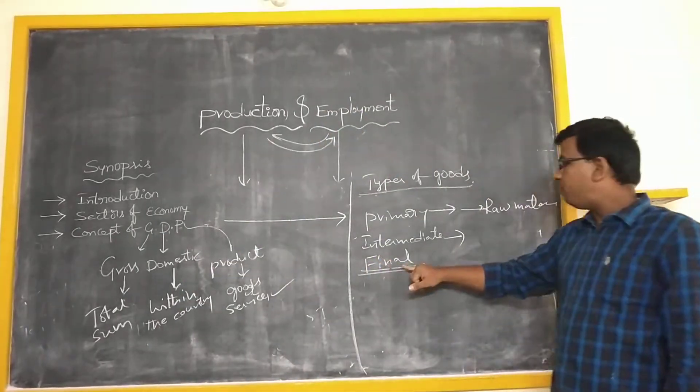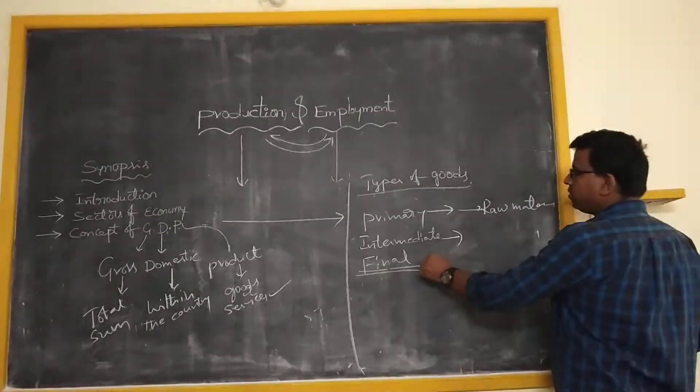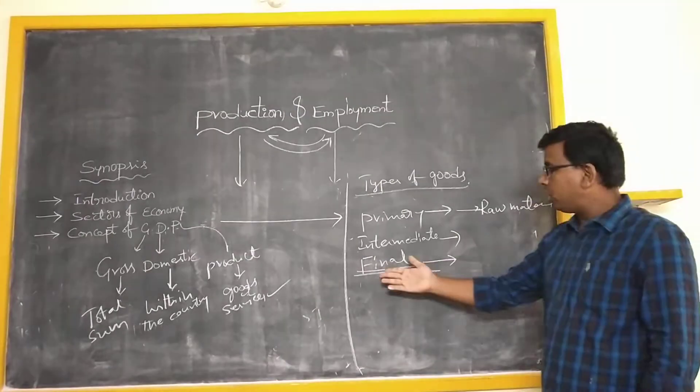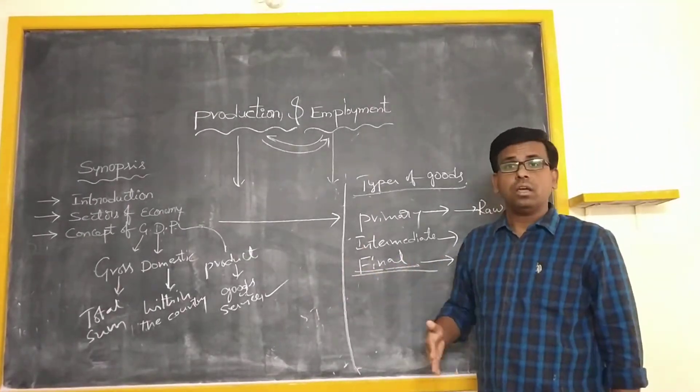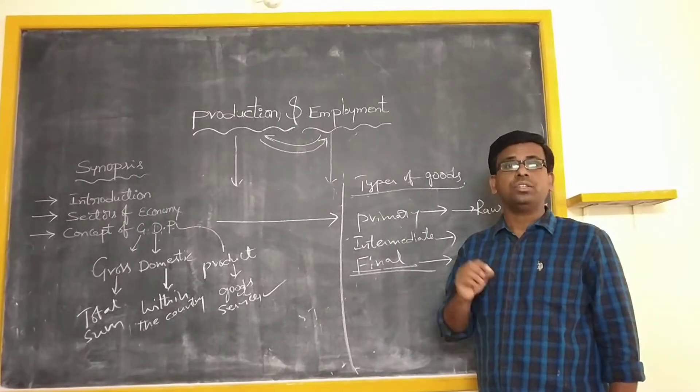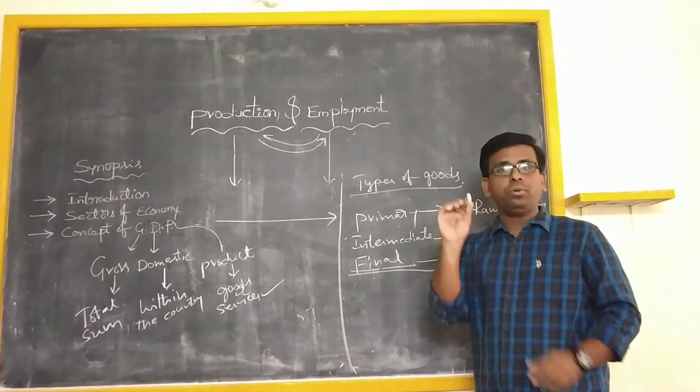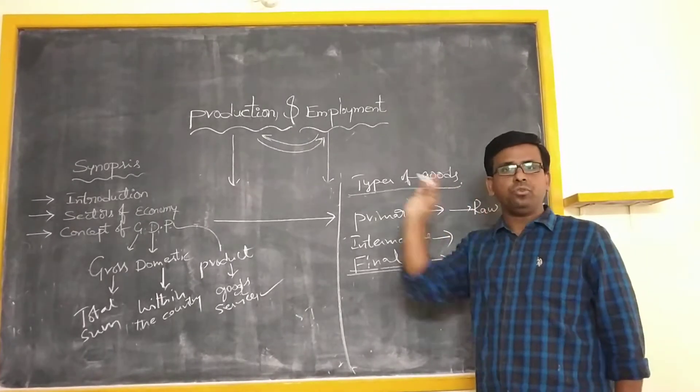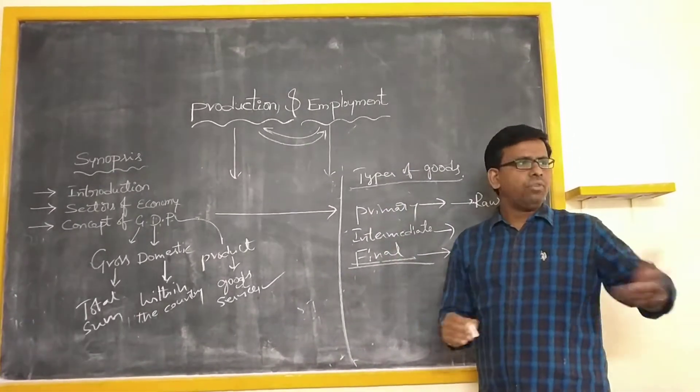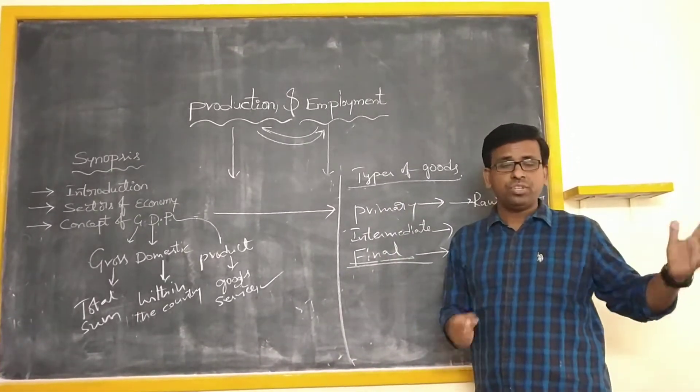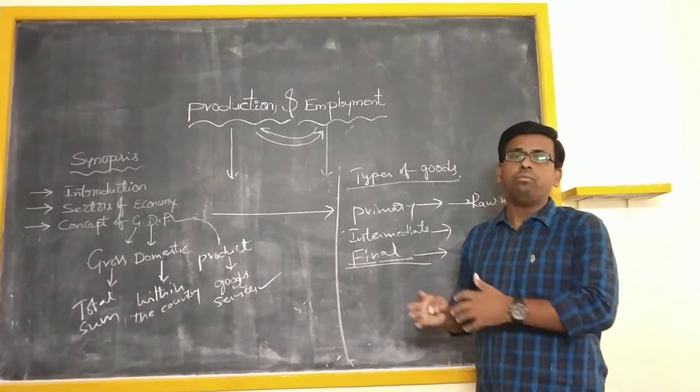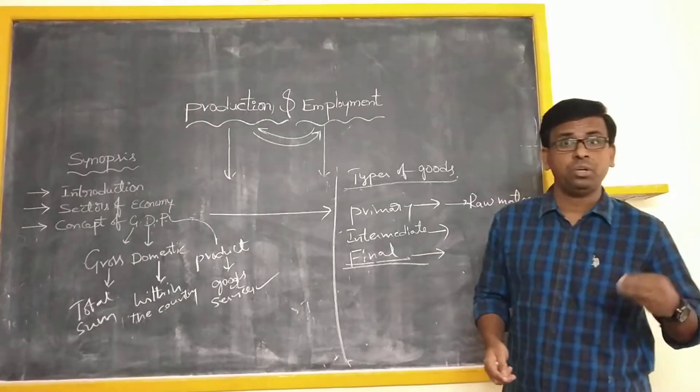And next comes to final goods. The name itself is same, final goods are the goods which are readily available for usage or consumption. For example, this piece of chalk, which is ready for usage. In the same way, you can take even different types of goods also, which are readily available for usage or even for consumption also.